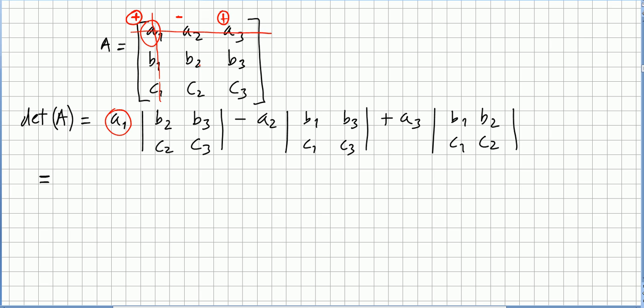So what do you see? You see B2, B3, C2, C3. And you get the determinant of B2, B3, C2, C3.